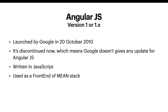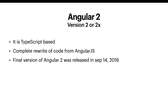AngularJS was version 1, or 1.x, covering any subsequent updates to version one. Then Angular 2 was launched in 2016, meaning from 2010 to 2016 it was only Angular 1.x versions. Angular 2 was a major change over Angular 1 — it was a completely different and rewritten codebase from scratch.